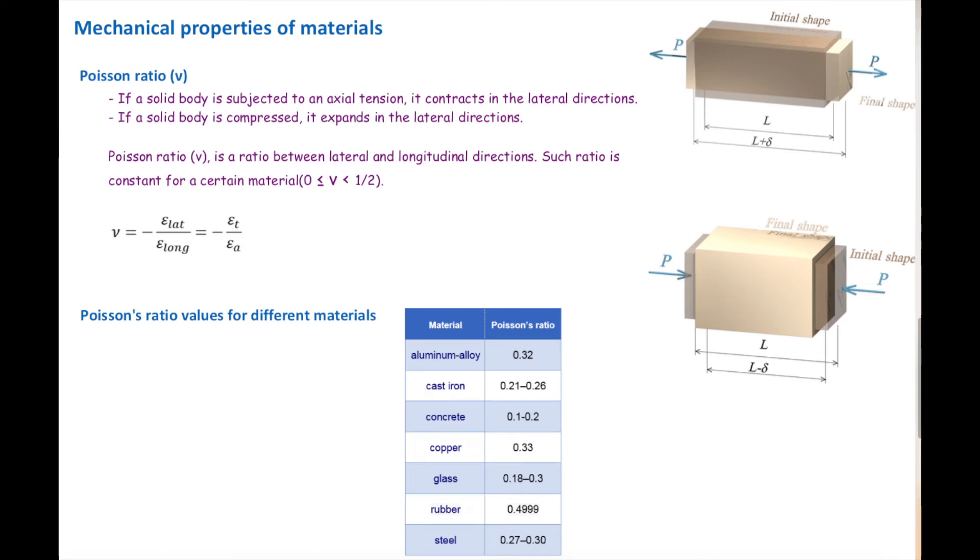Poisson's ratio is defined as the ratio between the lateral strain and the longitudinal strain. Here we would like to talk about what are the acceptable limits for the Poisson's ratio, and why Poisson's ratio should stay within that limit in order to be physically acceptable.